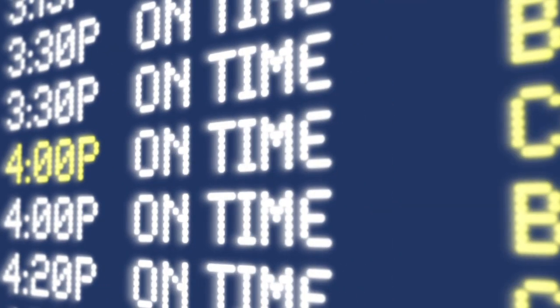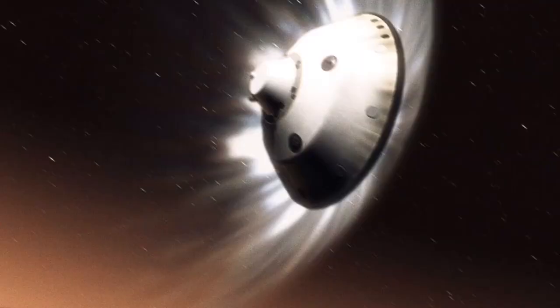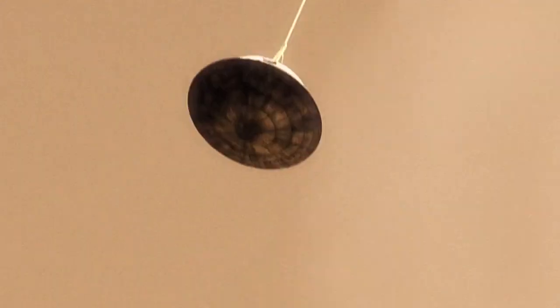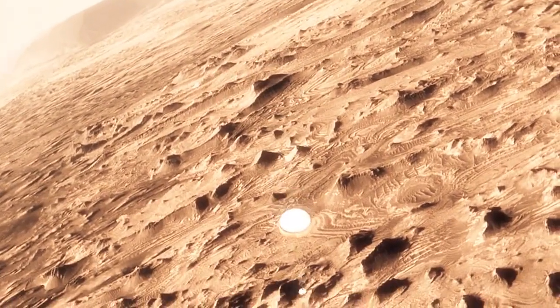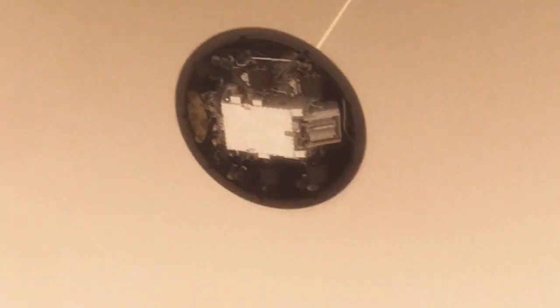Clearly, we can't test our designs on Mars. The question is, how can we get meaningful data here on Earth that will allow us to appropriately size the parachute for use on Mars? How do we predict the behavior of a parachute on Mars based on an Earth experiment? And what variables do we need to consider in designing our experiment on Earth? This is where a problem-solving method called dimensional analysis can help us.